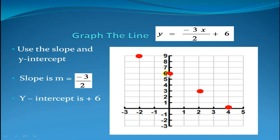you go down 3, across 2. Down 3, across 2. Down 3, across 2. And once you've done that, now you're ready to draw a line through all of these points, like so.